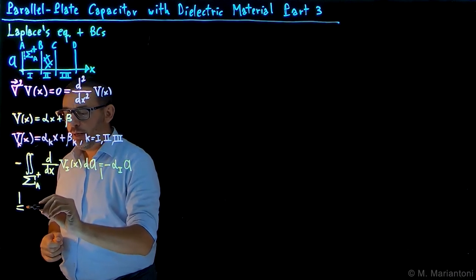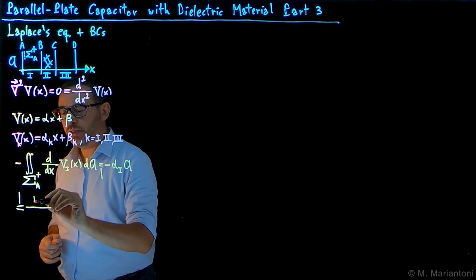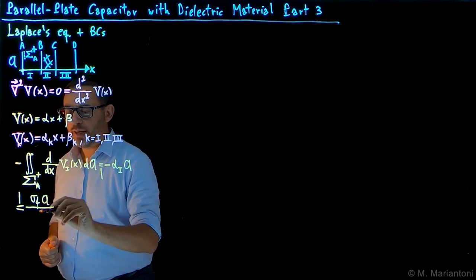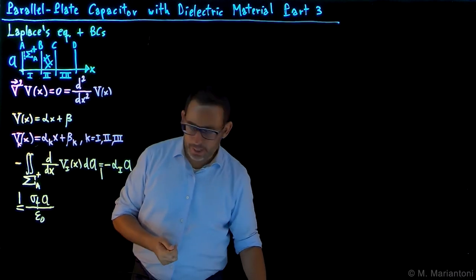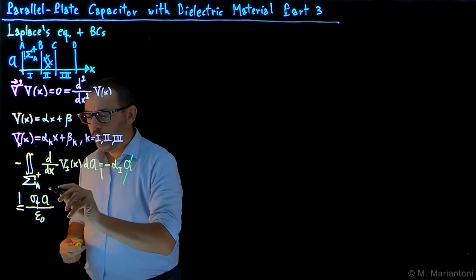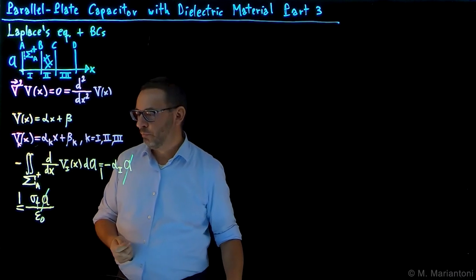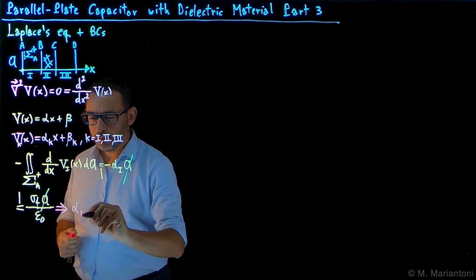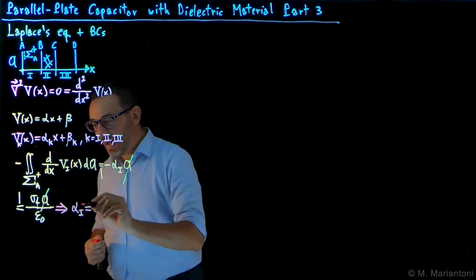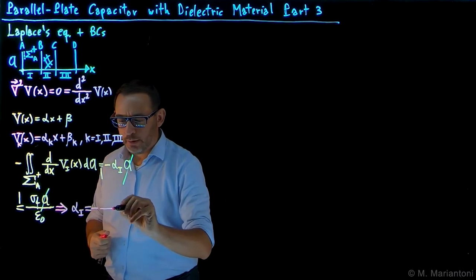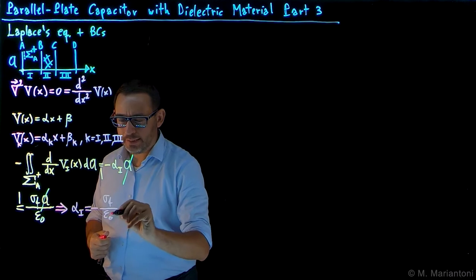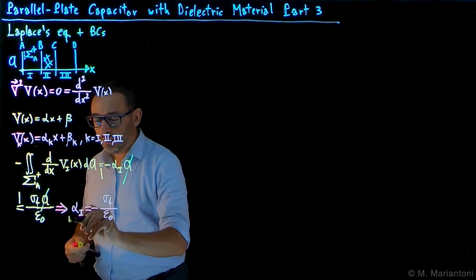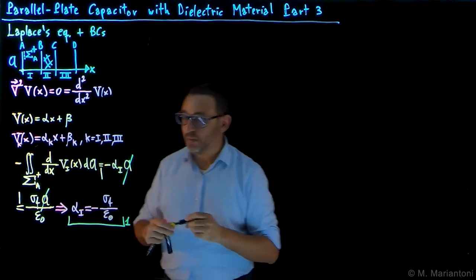This quantity has to equal the charge on that surface divided by ε₀, which is the total charge σ_F times the area A divided by ε₀. The areas A cancel, and from this we obtain that α₁, the first of the six parameters, equals −σ_F / ε₀. This makes sense because we are in vacuum, so we divide only by ε₀. This is parameter one.